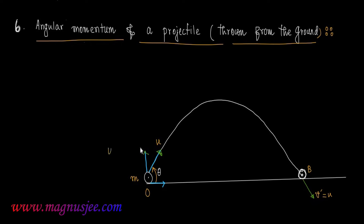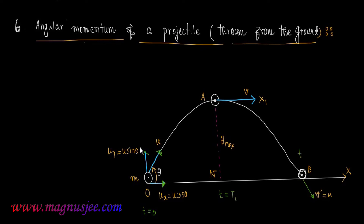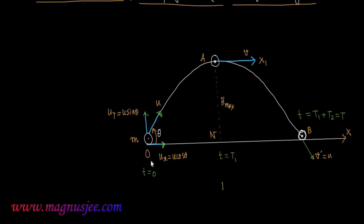We consider the two rectangular components of the initial velocity u: u_y is the vertical component and u_x is the horizontal component. When the projectile reaches point A it moves along the tangent with velocity v, and the normal AN on the ground gives the maximum height h_max. At O, t = 0; at N, t = T1; at B, t = T1 + T2 = T, the time of flight. The maximum horizontal range is denoted R.